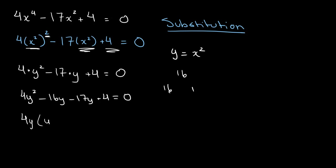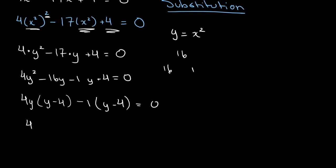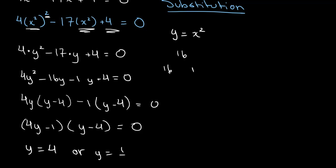Factoring by grouping: 4y times (y minus 4) minus 1 times (y minus 4) is equal to 0. From this we get (4y minus 1) times (y minus 4) is equal to 0. Therefore, y is either equal to 4 or y is equal to 1 over 4. So these are our solutions to our quadratic equation.